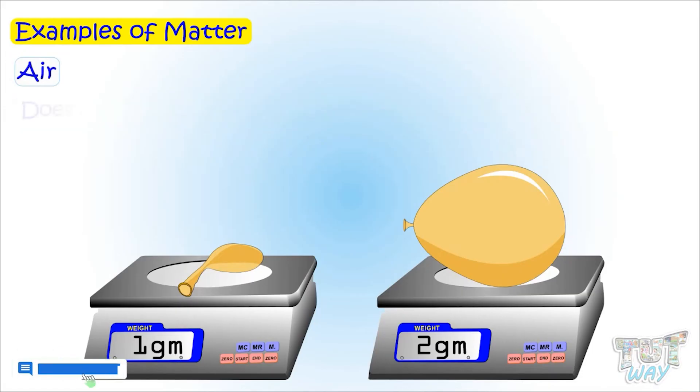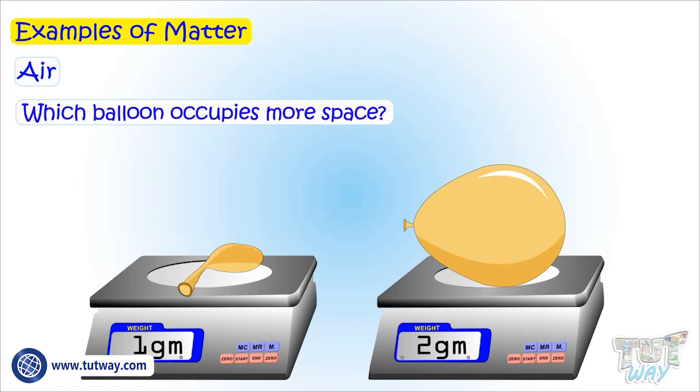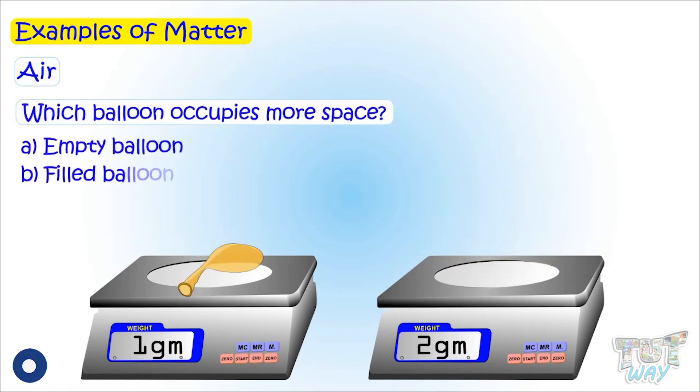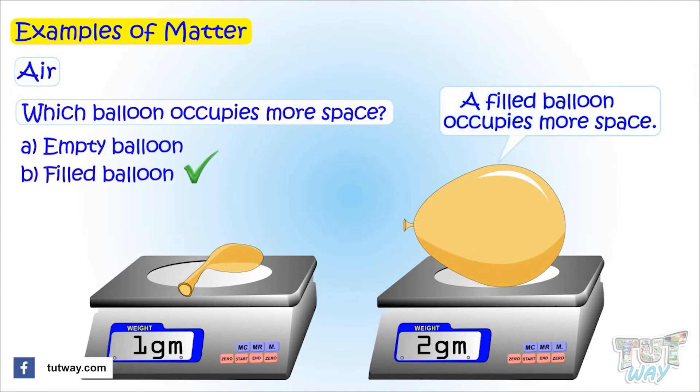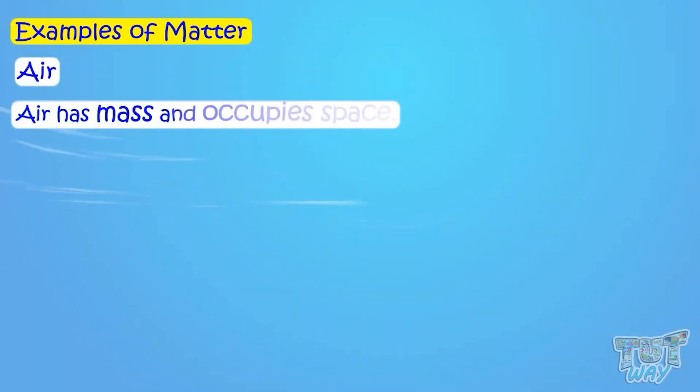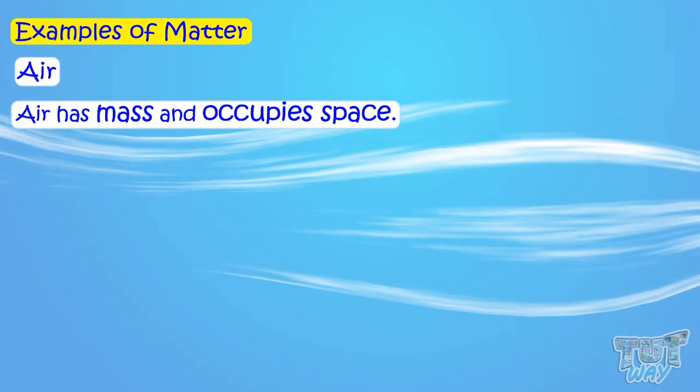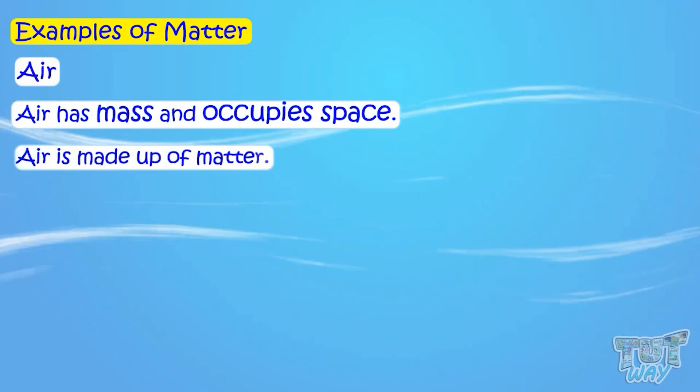Now let's see if air occupies space. Now which balloon occupies more space, an empty balloon or a filled balloon? A filled balloon occupies more space, so it means that air occupies space too. So air has mass and occupies space. So we can say air is made up of matter.